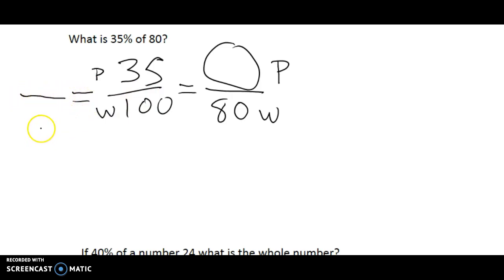Now I have to think to myself, 100 times what is 80? Now there is actually a number, but it's going to be a decimal. It's going to be a little bit complicated. So what I might want to do is actually simplify a little bit.